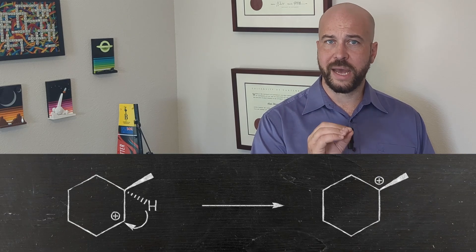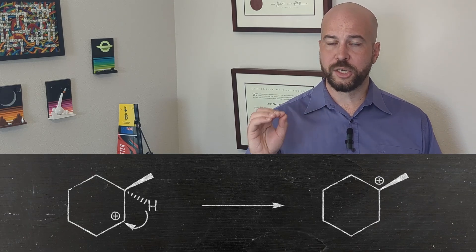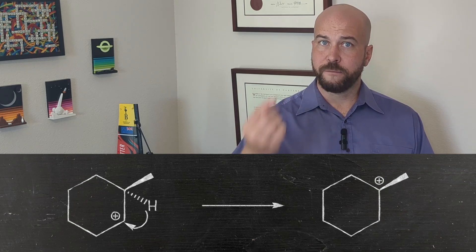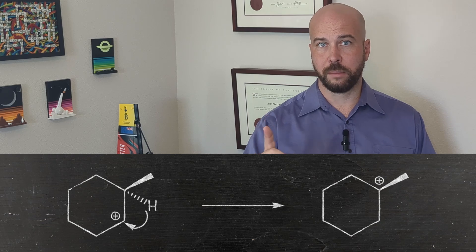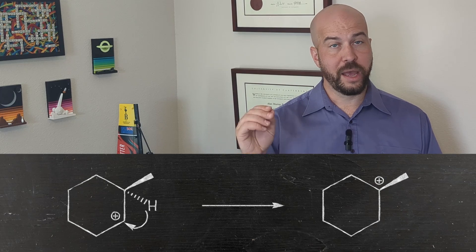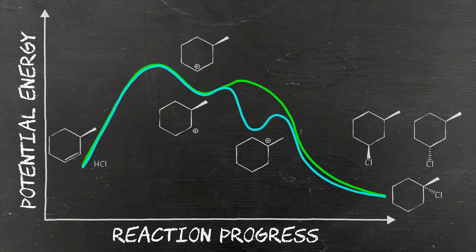For example, the hydride shift. If we have a secondary carbocation next to a tertiary carbon atom, it is possible for the hydrogen on the tertiary carbon to move over to the secondary, which generates a tertiary carbocation, which as we said earlier is lower in energy than a secondary one.